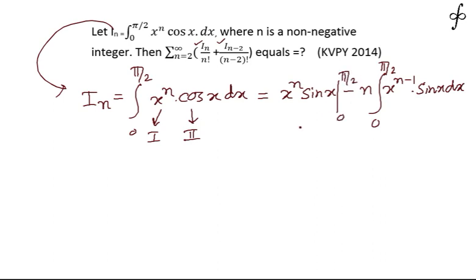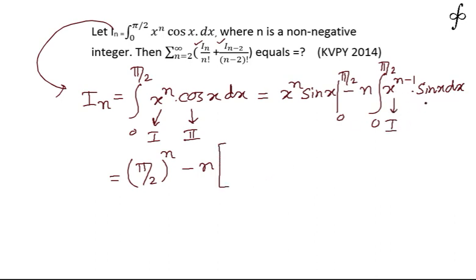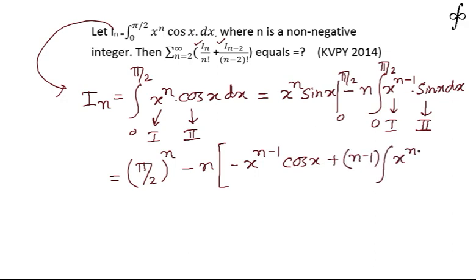We substitute the limits in the first portion, getting (π/2) to the power n on the upper limit and 0 on the lower limit. For the remaining integral, we apply integration by parts again, taking the algebraic function as first and trigonometric as second, yielding minus x to the power (n-1) times cos x plus (n-1) times the integral of x to the power (n-2) times cos x dx.